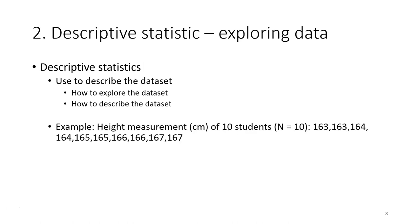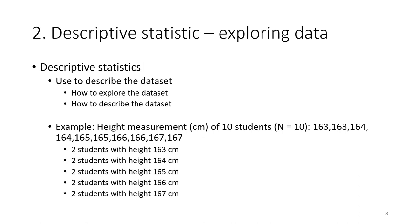For example, this is a height measurement for 10 students. The first thing you want to do is explore or describe the data set. In this case, I can see there are two students with height 163, two students with height 164, two students with height 165, and so on. If your data set is quite small, it is still possible to describe it in words and communicate with others without showing the numbers.